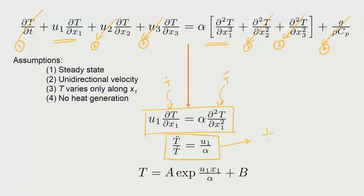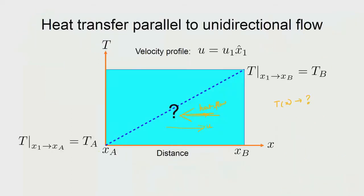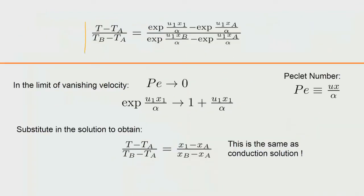Integrating once gives ln(T-dot) equals u₁x/α plus a constant. Exponentiating gives T-dot as an exponential in u₁x/α times a constant. Integrating again introduces another constant b. The solution is therefore in exponential form. The constants a and b are determined from boundary conditions: T equals Tₐ at x equals xₐ, and T equals T_b at x equals x_b, yielding a symmetric expression involving exponentials.